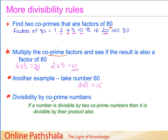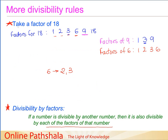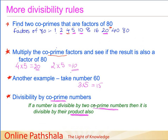We have now discovered a rule called divisibility by co-prime numbers: if a number is divisible by two co-prime numbers, then it is also divisible by their product. This is in a way the reverse of the earlier rule, which stated that if a number is divisible by another number, then it is also divisible by each of the factors of that number.